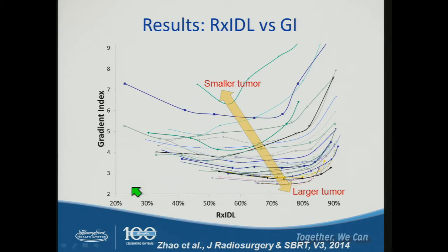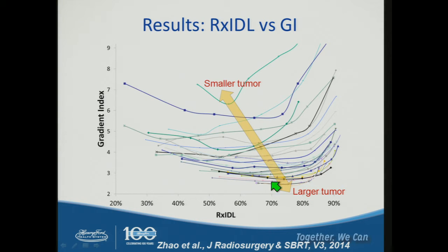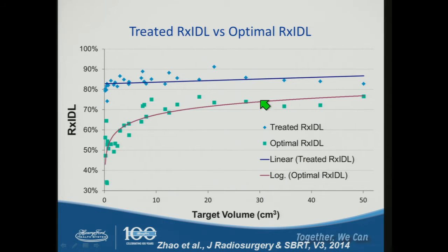The result shows a curve comparing gradient index versus prescription isodose line, where each line represents one patient with about six different plan points. There is a clear trend: as tumor size grows, the optimal prescription isodose line — which corresponds to minimum gradient index — tends to shift toward a larger prescription isodose line. For LINAC-based treatment, we typically treat at about 80–90%, but for small lesions the optimal isodose line may be around 50%, as used in Gamma Knife treatment.